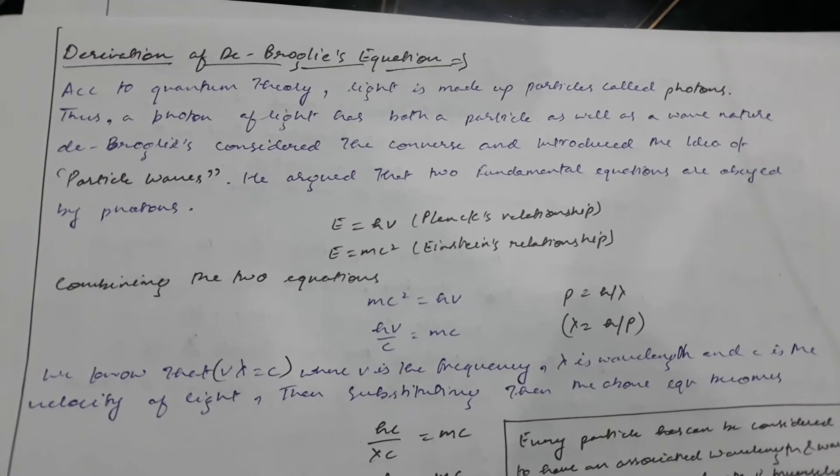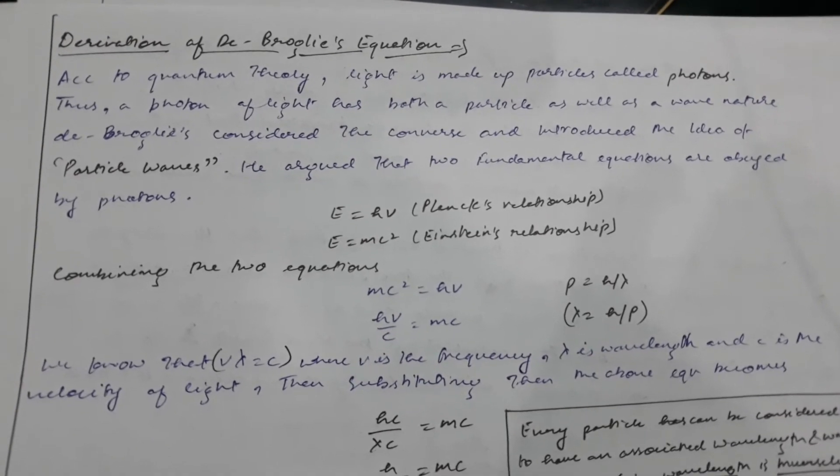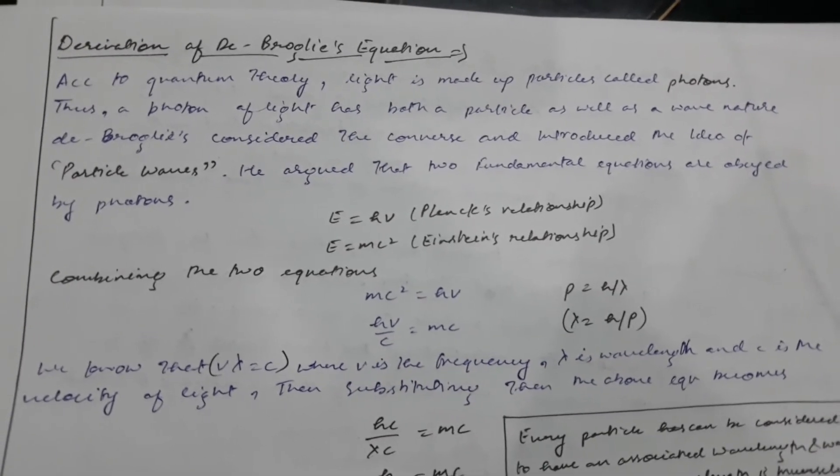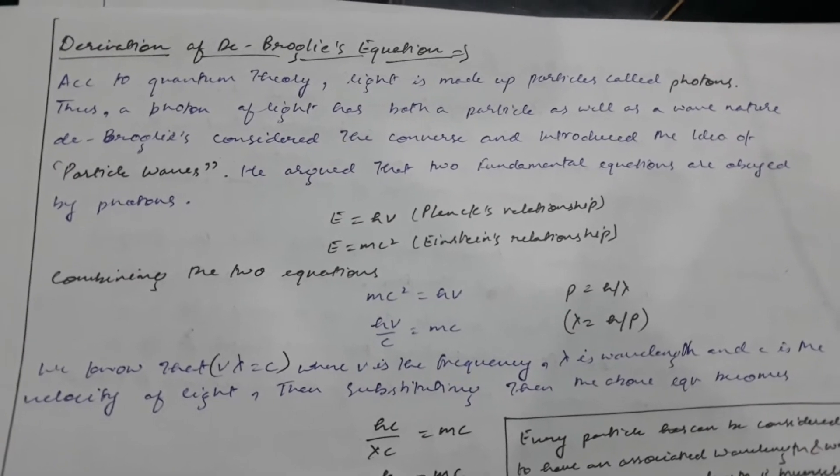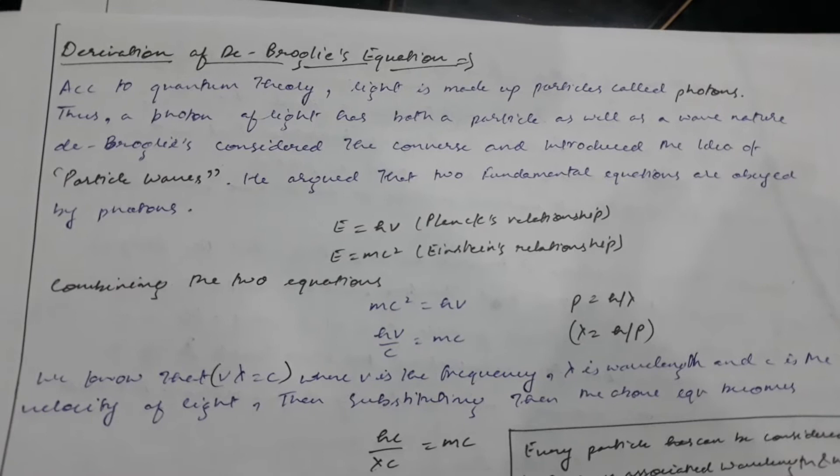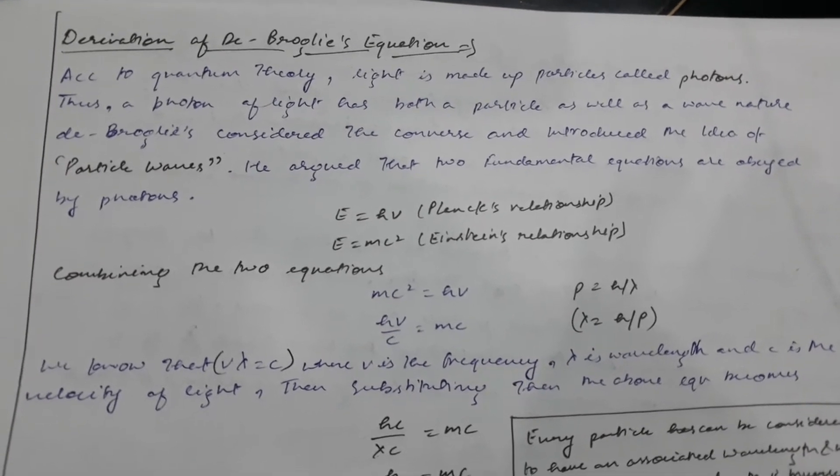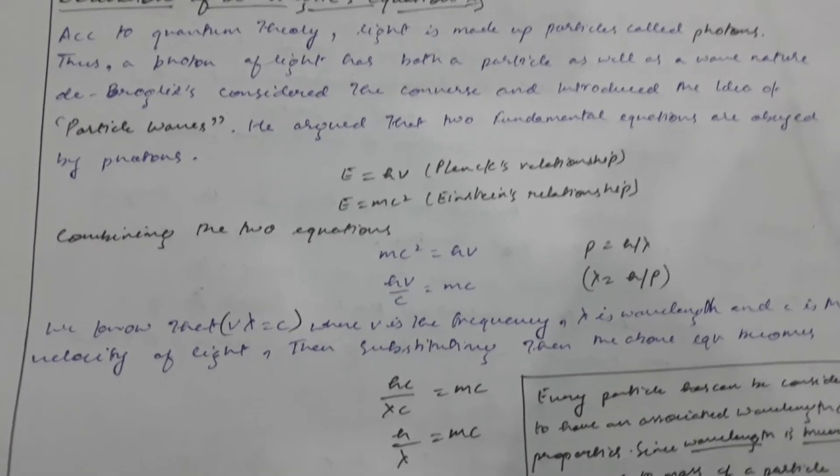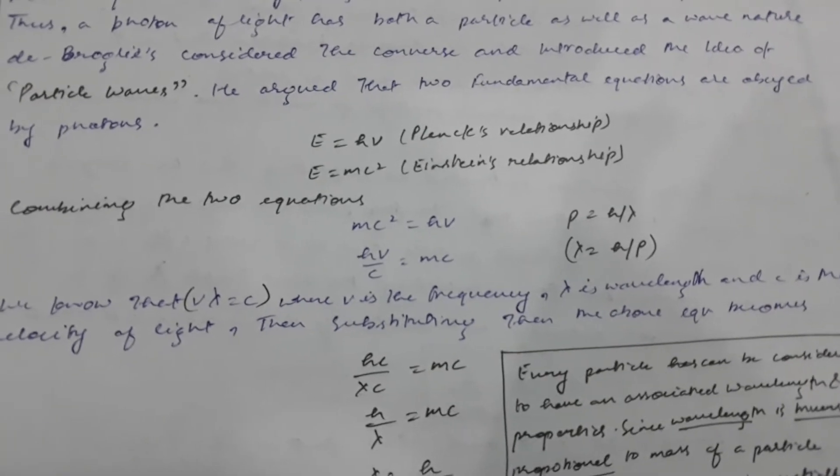Photons of light have both particle as well as wave nature. De Broglie considered the converse and introduced the idea of particle waves. He argued that two fundamental equations are obeyed by photons.